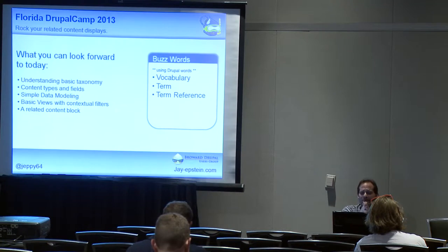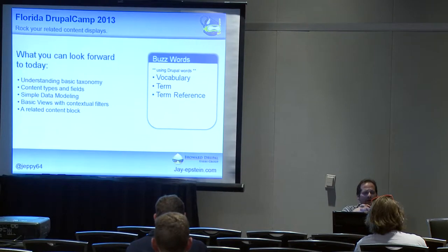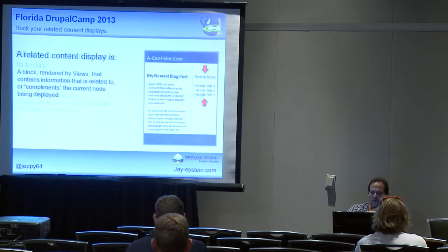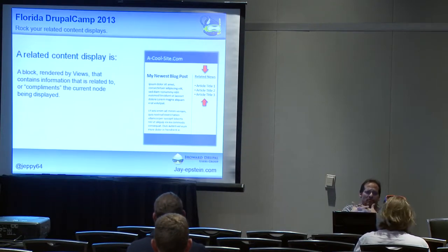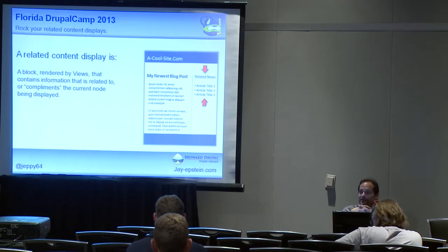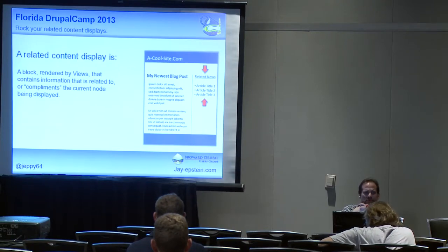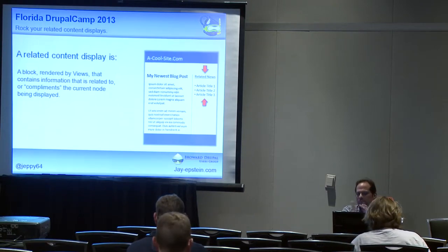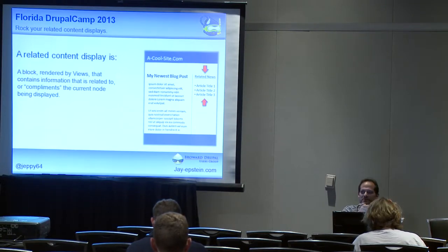So, buzzwords — very few actually. Vocabulary, term to term reference — that's really all we need to worry about, and that's going to get us pretty far. What is a related content display? You're looking at a node and over on the right-hand side, they're going to give you some other complementary pieces of content directly related to what you're looking at. Sometimes it's text, sometimes it could be a video or an image.